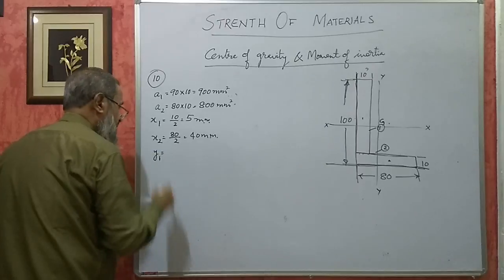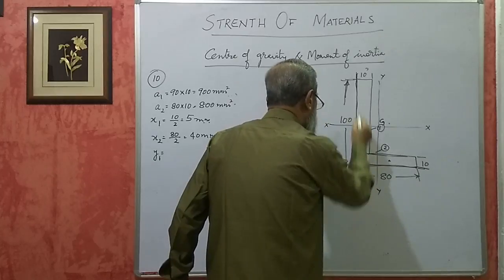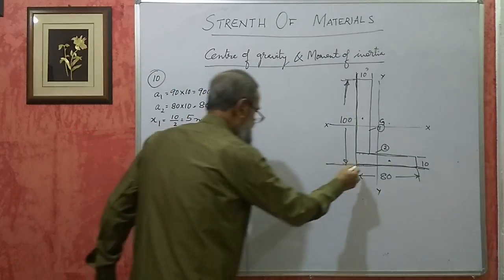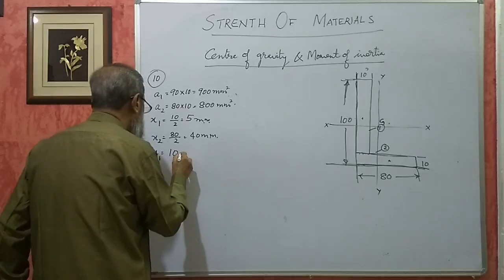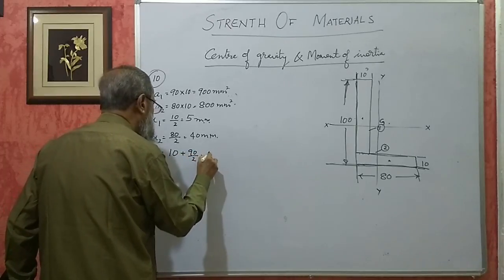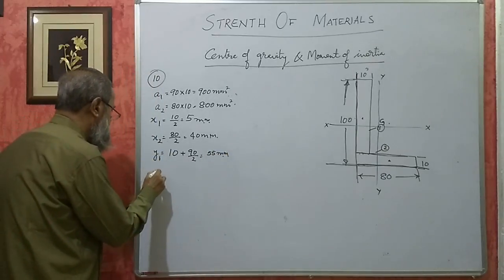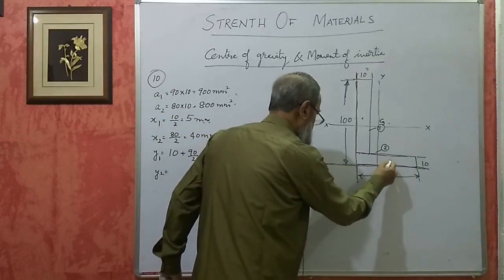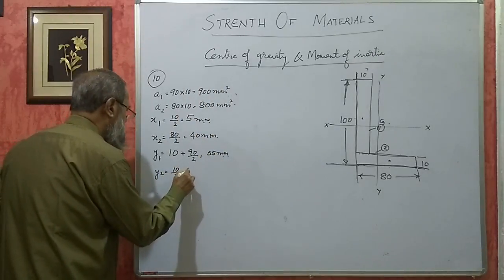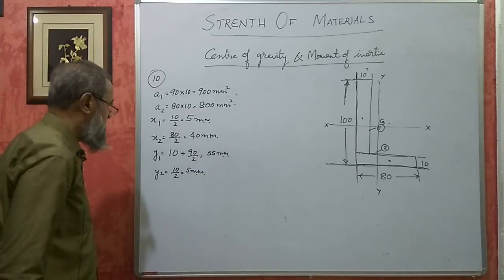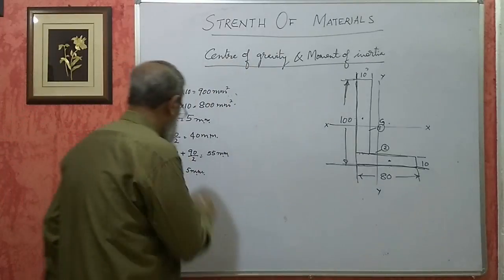Y1 is from the reference line to the centroid of rectangle 1: 90 divided by 2 is 45, plus 10, gives 55 mm. Y2 is the distance for rectangle 2, which is 10 divided by 2, that is 5 mm. These are the reference values for finding the center of gravity.